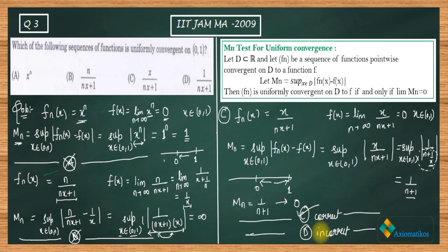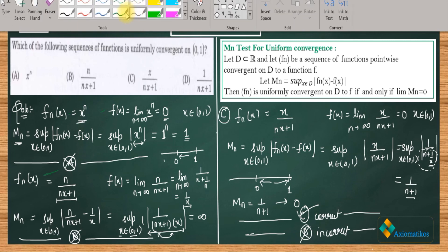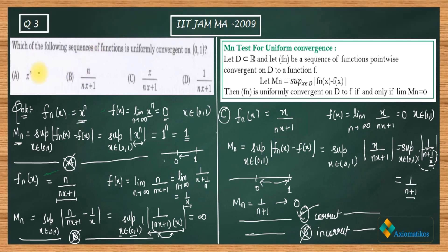To summarize: Option A is incorrect, Option B is incorrect, Option C is correct, and Option D is incorrect. Thank you.